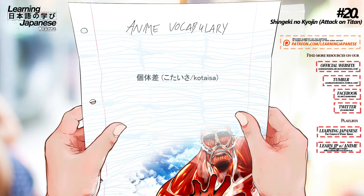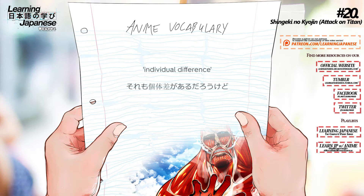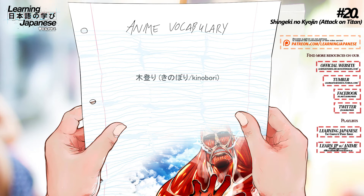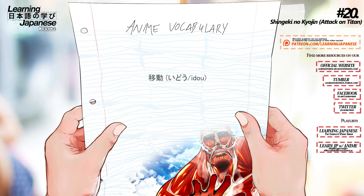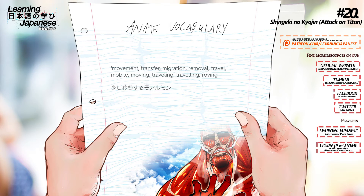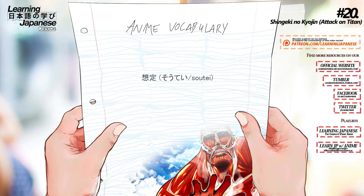Individual difference. 木登り (kinobori) — Tree climbing. 移動 (idou) — Movement, transfer, migration, removal, travel, mobile, roving. 想定 (soutei) — Hypothesis.